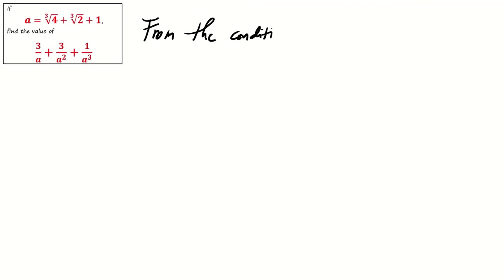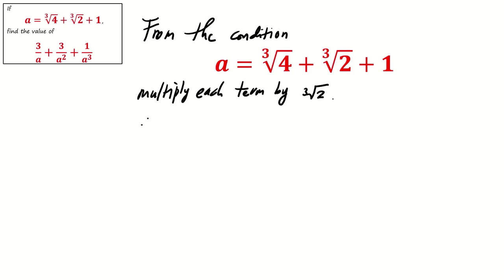From the condition that a equals cube root of 4 plus cube root of 2 plus 1, we can multiply each term by cube root of 2. By doing so, on the left-hand side, we get a times cube root of 2 equals, on the right-hand side,